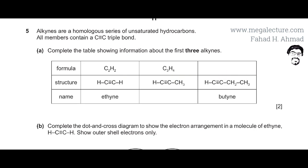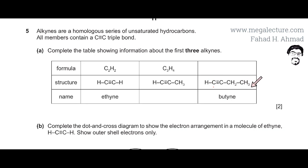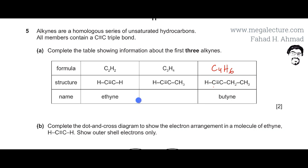The first thing is to give the formula — there's an empty box to fill. I need to count the number of carbons: one, two, three, four carbons, and the number of hydrogens: one, two, three, four, five, six. So the formula is going to be C4H6. That's the formula of that hydrocarbon.